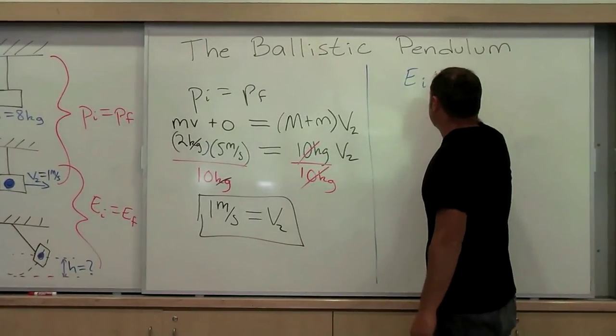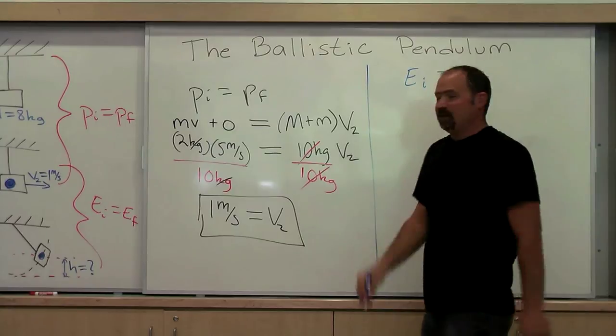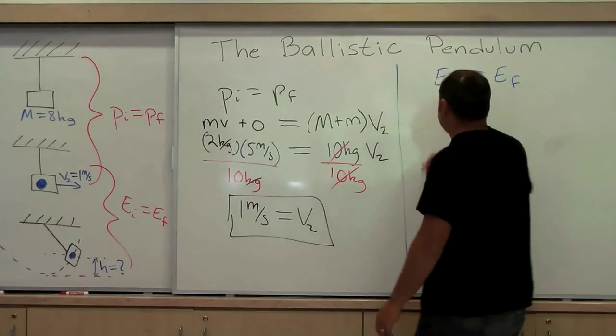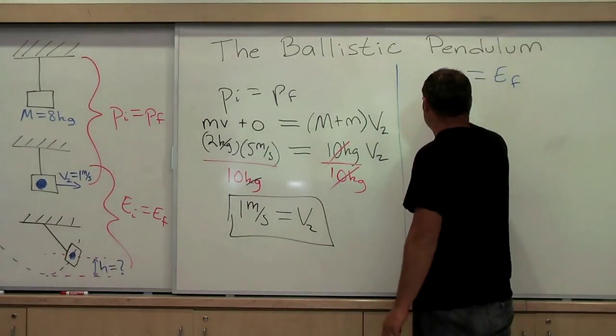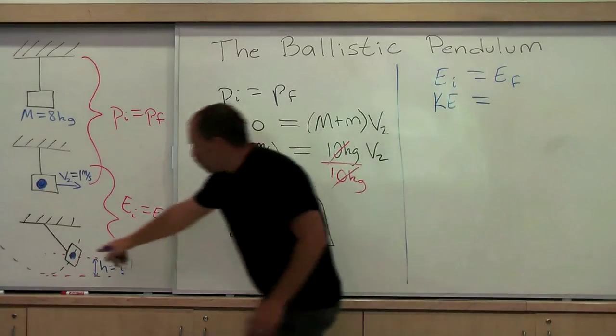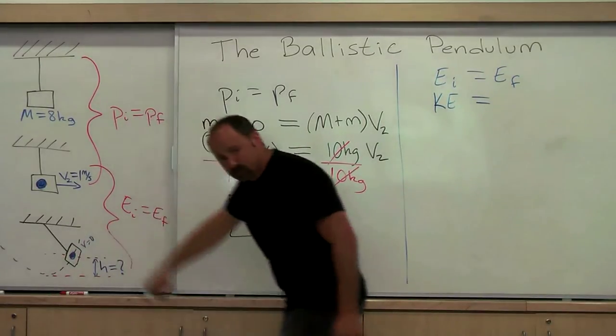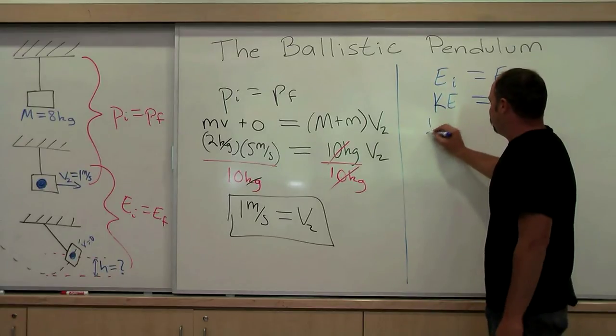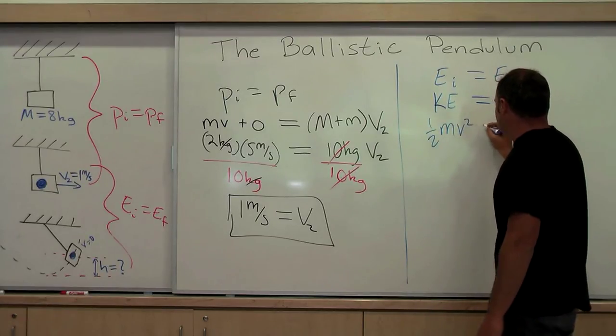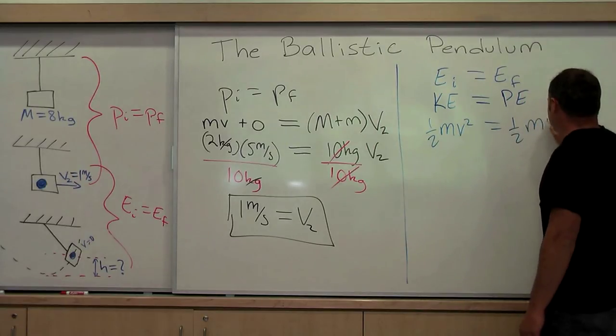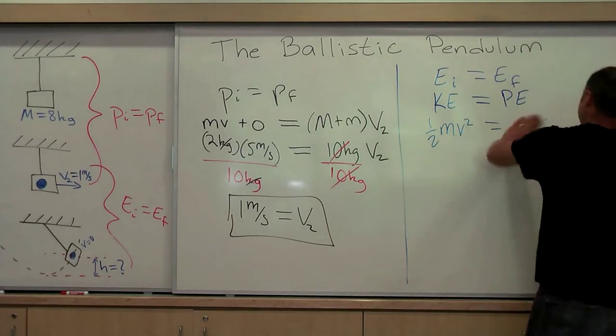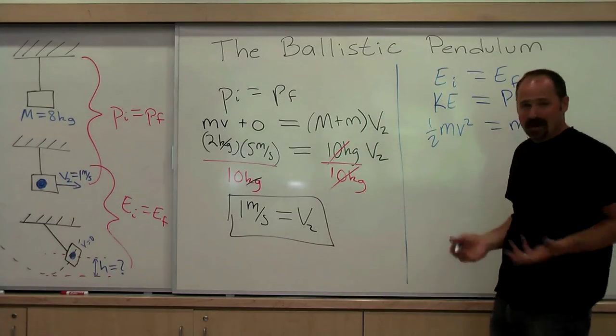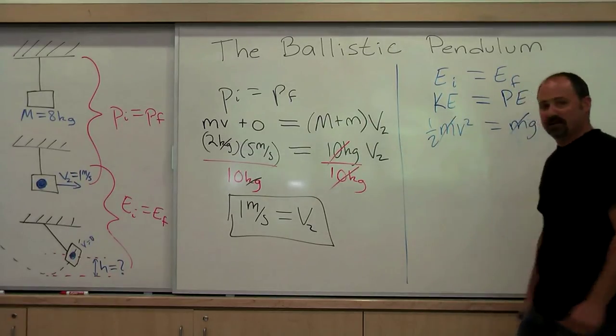And now we can use energy conservation to solve for the height that the pendulum swings up to. So the initial energy equals the final energy. Well initially it's at the lowest point down here but it has some speed. So it has zero potential energy but it does have kinetic energy. At its highest point the speed is zero. Therefore there's no kinetic energy but there is potential energy. And now if we just plug in we have one half mv squared equals mgh. Where this m is not the little m it's the combined mass, which will cancel out anyway because you have it on both sides.